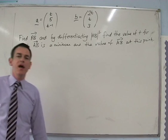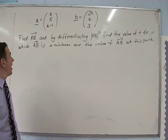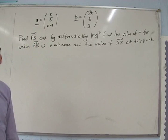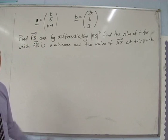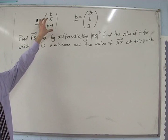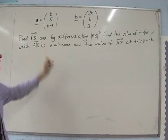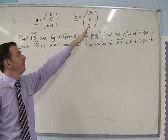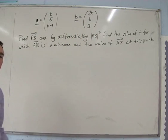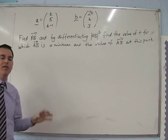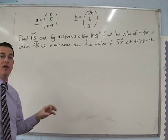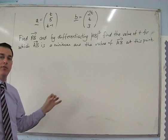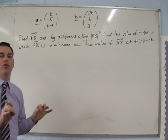We've got two points A and B. A has position vector (t, 5, t minus 1) — we can also describe where A is as a column vector. The position vector of B is (2t, t, 3). So we've got two points that aren't fixed but are actually moving around as t changes, and they'll also be moving relative to each other as well.